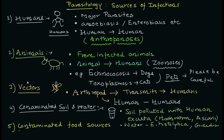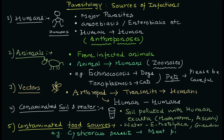Next are contaminated food sources. Certain types of food, especially meat products, can be contaminated with the cysticercus parasite, so you have to be very careful while cooking. There are also many parasites that can live on vegetables, so you must be very careful while cleaning and eating your vegetables.